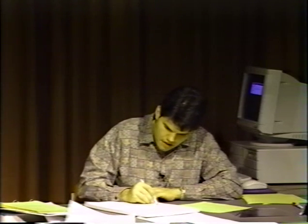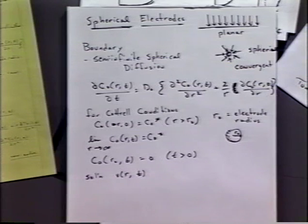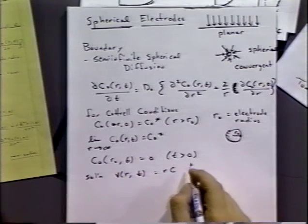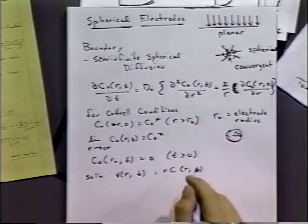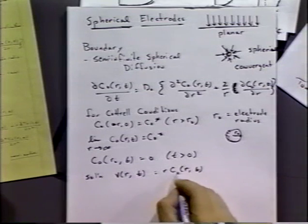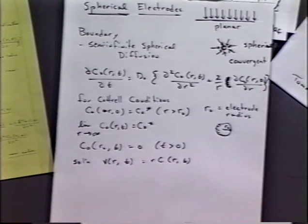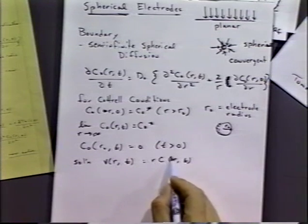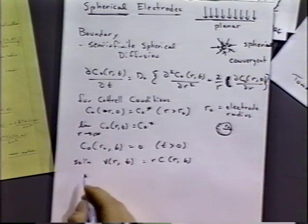The solution is easiest to approach if we make a substitution. We substitute a dummy variable V and make that equal to R times C(R,T). If we make the substitution V(R,T) = R·C(R,T), then the solution becomes much simpler, as we'll see in a minute.